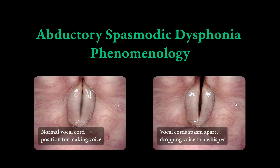Here's a short explanation of abductor spasmodic dysphonia phenomenology. On the left, you see that during normal voicing, the vocal cords are positioned very closely together, vibrating and making a blur. On the right side of the picture, you see there's an increased space between the vocal cords because they have been spasmed apart — pulled apart involuntarily — and that has dropped the voice to a whisper.